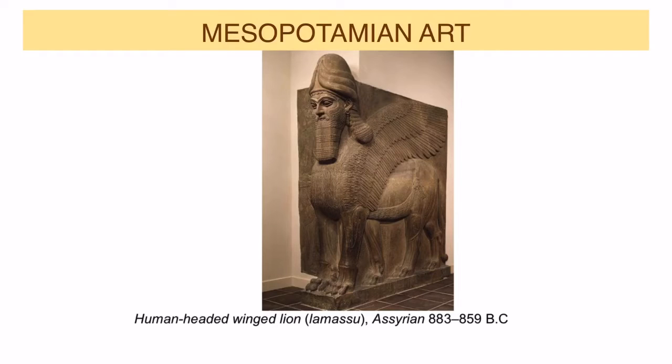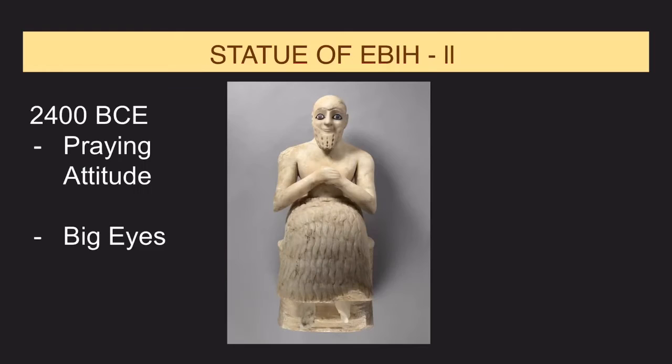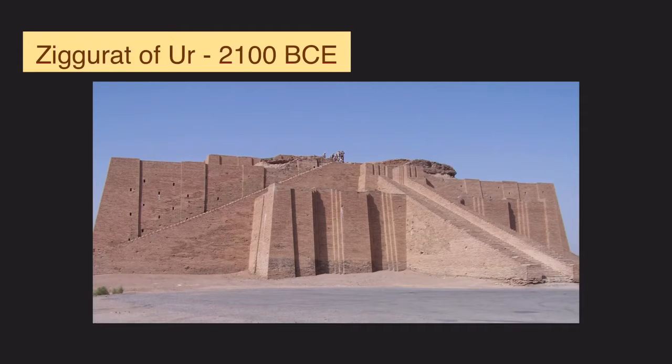Then we have Mesopotamian civilization, which developed a different art. They sculpted mythical creatures, developed the cuneiform writing, and their sculptures represented kings and priests in a praying attitude.